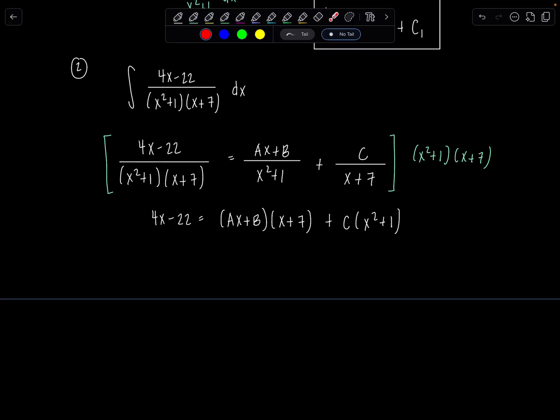I could plug in negative 7 for x and solve for one of the constants, but honestly, at this point, since we have to do multiplying out for the other two, we might as well. So 4x minus 22 is going to be ax squared plus 7ax plus bx plus 7b plus cx squared plus c.